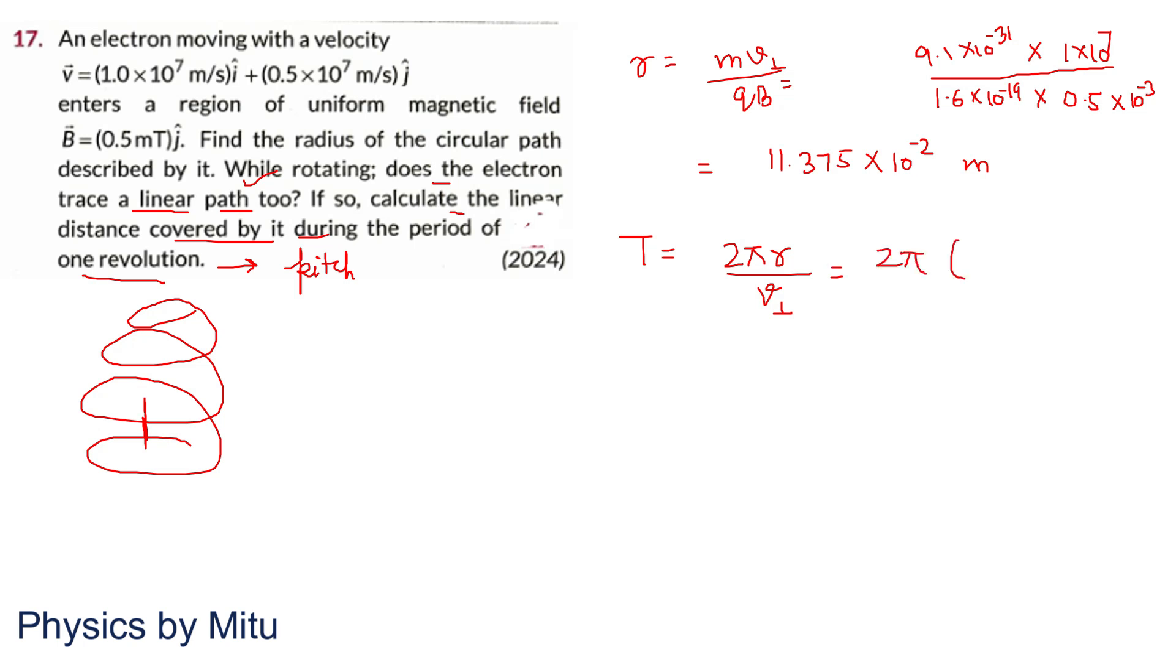So 2 pi R - I am not solving, just giving you the value. The radius value from above, whatever came, you will put it here. V perpendicular is 1 into 10 raised to power 7. This gives you the time period.